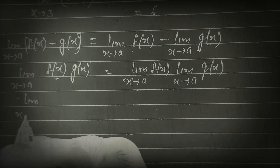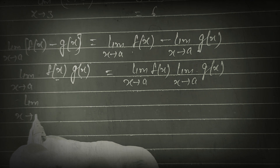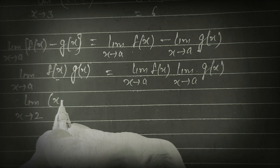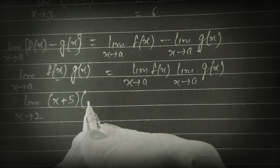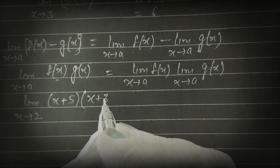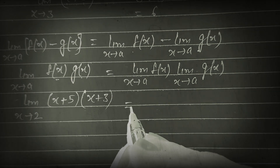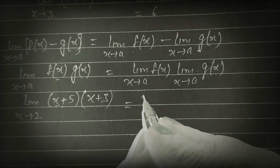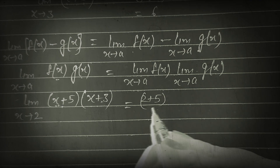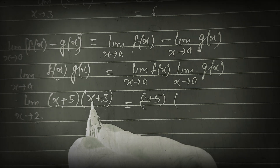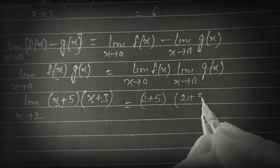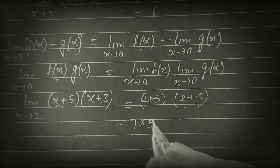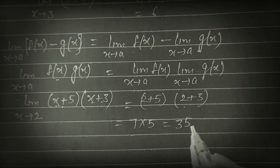For example, limit x tends to 2 of (x + 5)(x + 3). We put limit on both: if x = 2, then (2 + 5) = 7 and (2 + 3) = 5. So 7 × 5 = 35. That is the answer.